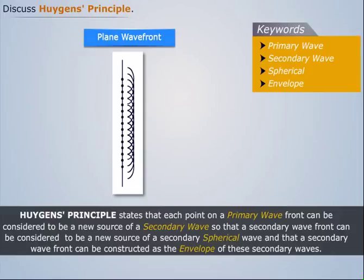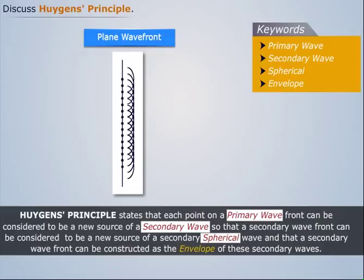Thus, Huygens' Principle states that each point on a primary wave front can be considered to be a new source of a secondary wave, so that a secondary wave front can be considered to be a new source of a secondary spherical wave, and that a secondary wave front can be constructed as the envelope of these secondary waves.